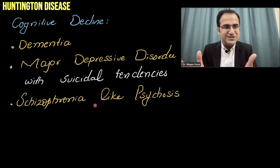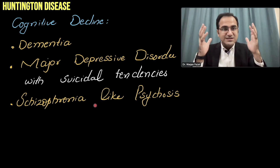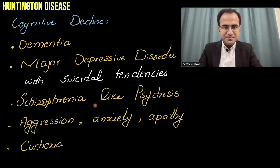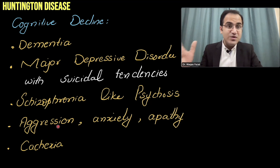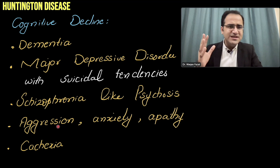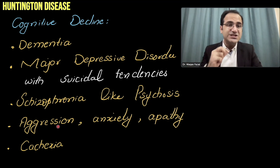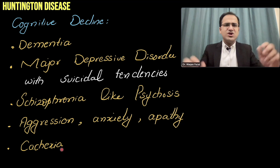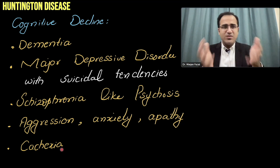Patients show behavioral changes including aggression and anxiety. Family members often report the patient became angry and aggressive without reason, completely unlike their previous personality. Apathy is also present. Cachexia occurs because continuously contracting muscles drive a high metabolic rate, causing significant weight loss.